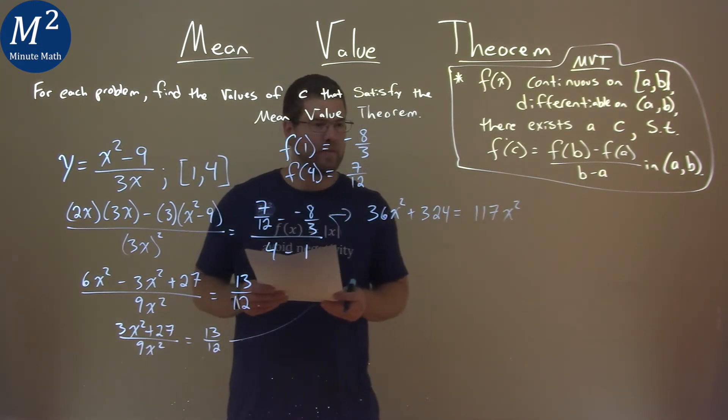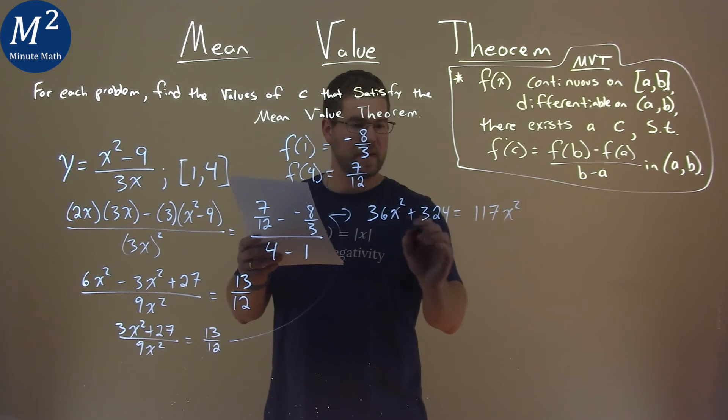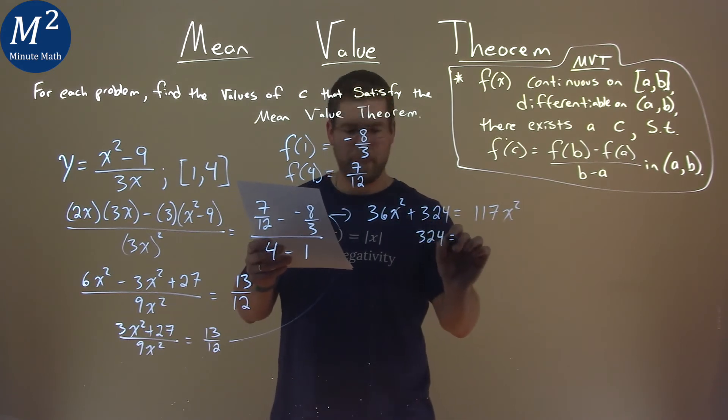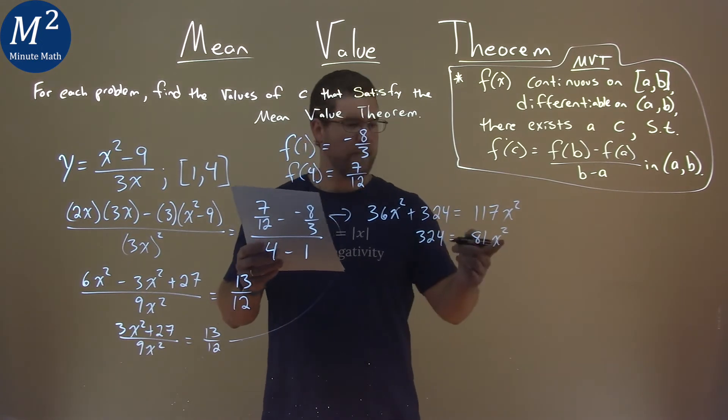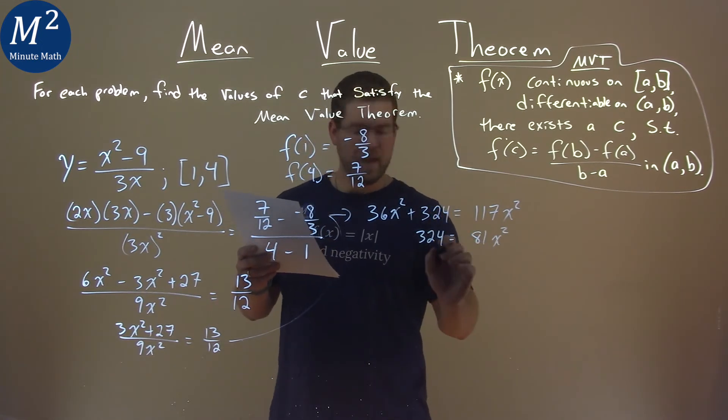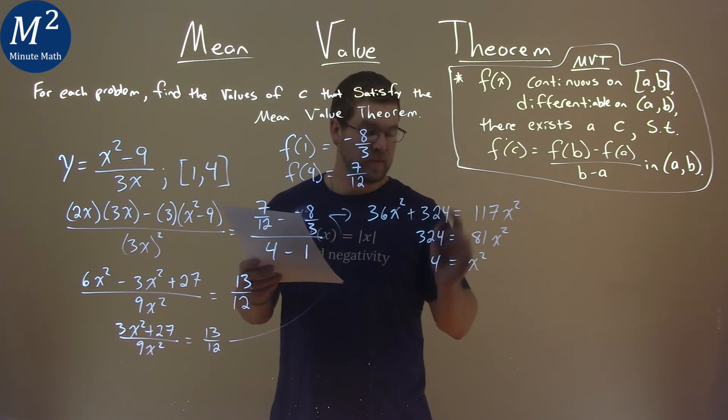From here now, we're solving for x. I'm going to subtract 36x squared to both sides. And I have 324 is equal to 81x squared. Divide both sides by 81, and I have 4 equals x squared. Take a square root of both sides, and x equals plus or minus the square root of 4, which is 2.